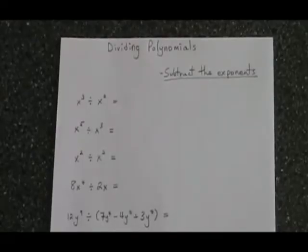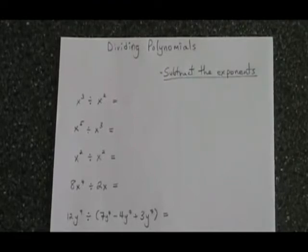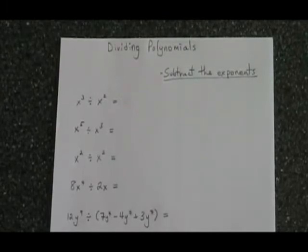When we divide polynomials, the rule is simple: we subtract the exponents. We've already learned that when we multiply polynomials, we add the exponents. So it makes sense that when you divide, you subtract the exponents.